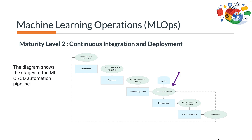Stage 4 is automated triggering: the pipeline is automatically executed in production based on a schedule or in response to a trigger. The output of this stage is a trained model that is pushed to the model registry.